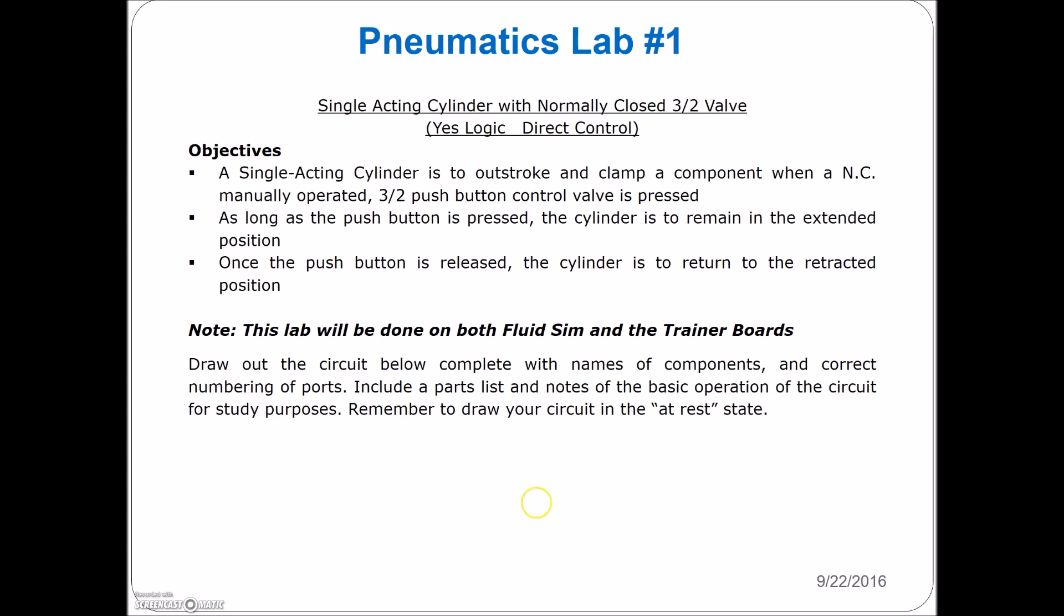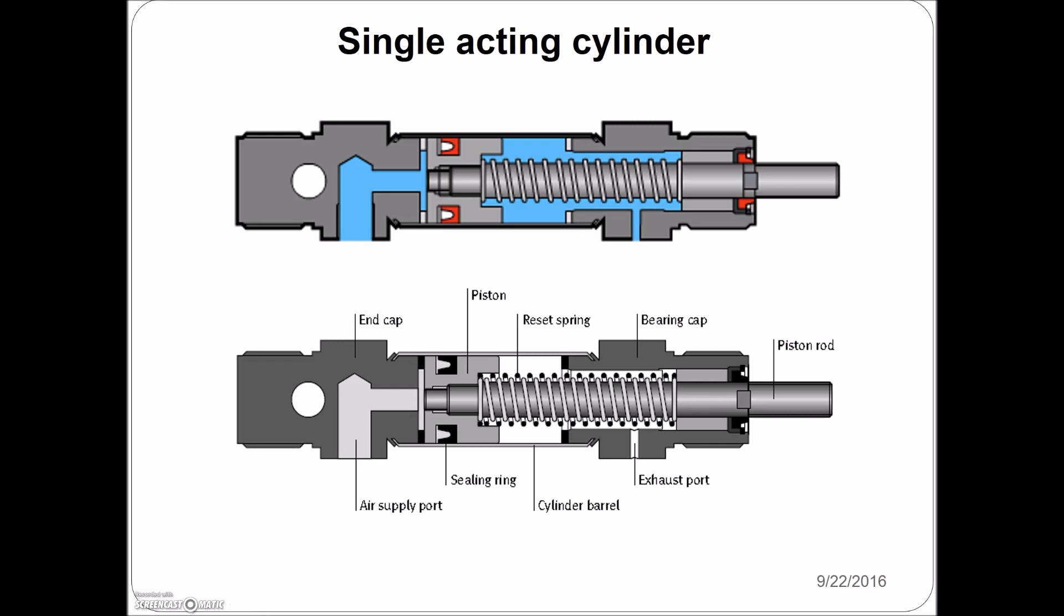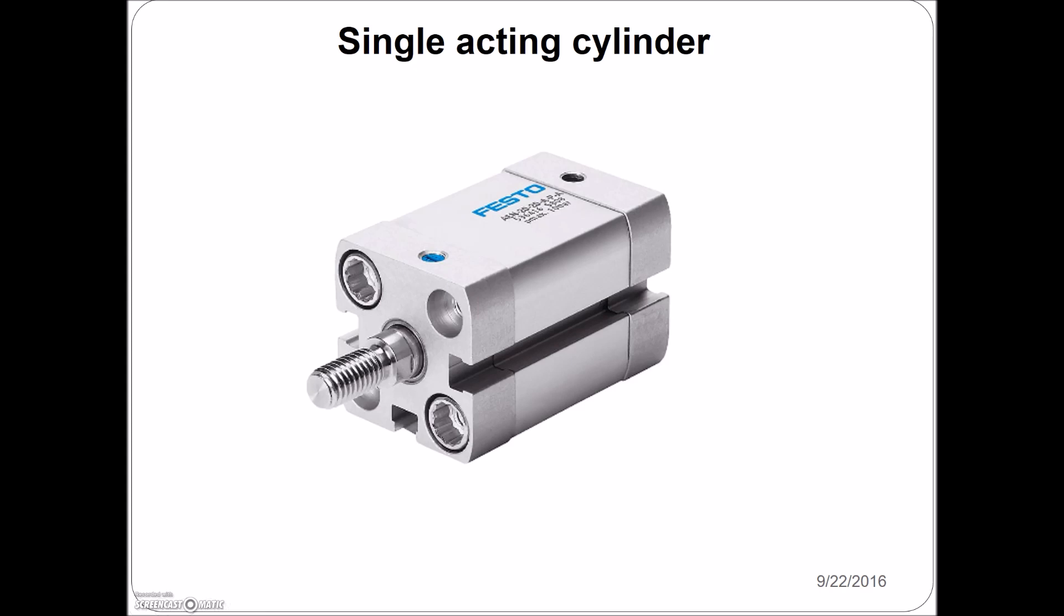Okay, so let's see. We need a normally closed push button, and we need a single-acting cylinder. Single-acting cylinder looks like this, where it has the one port. When we put that air to that one port, it's going to push against the spring and extend the cylinder. Once we release that air from the cylinder, then the spring retracts it to the initial position. Okay, so this would be your rest position for the single-acting cylinder. Looks like this, single port. Once you put air to here, then it's going to extend this cylinder.